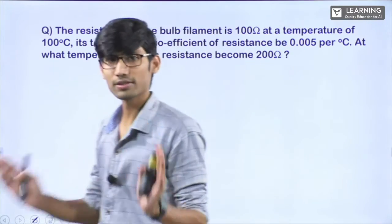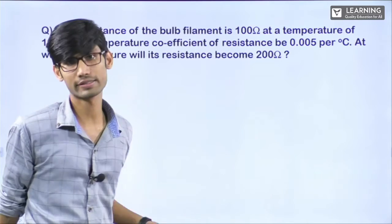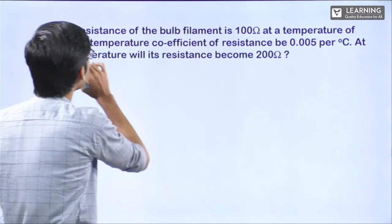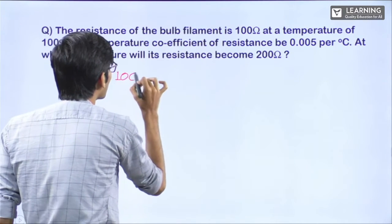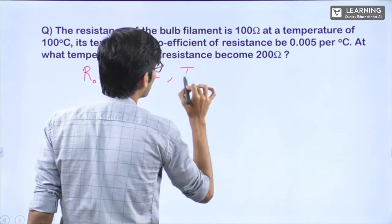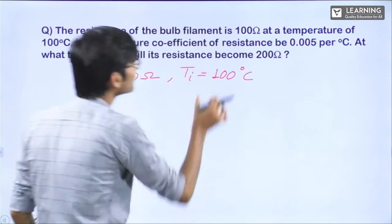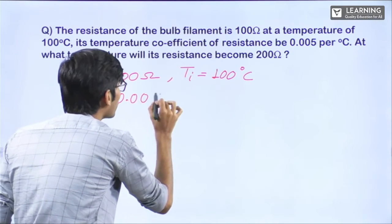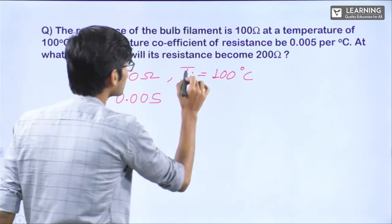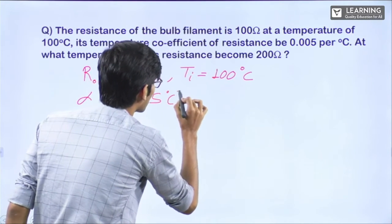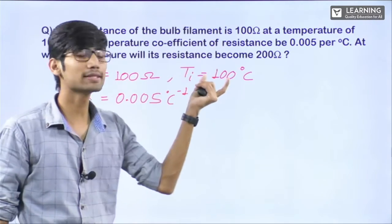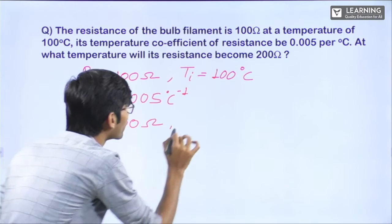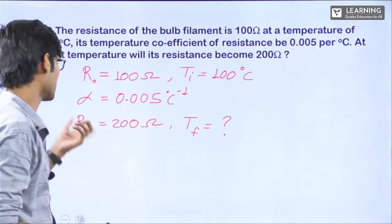Now let's see certain questions. The concept is over. We will see some questions to clarify our concept better. Question: The resistance of a bulb filament is 100 Ω at a temperature of 100°C. Its temperature coefficient α is given as 0.005 per degree Celsius. At what temperature will its resistance become 200 Ω? So: initial resistance R₀ = 100 Ω, initial temperature T_i = 100°C, α = 0.005 per °C, final resistance R_f = 200 Ω. We need to find T_f.